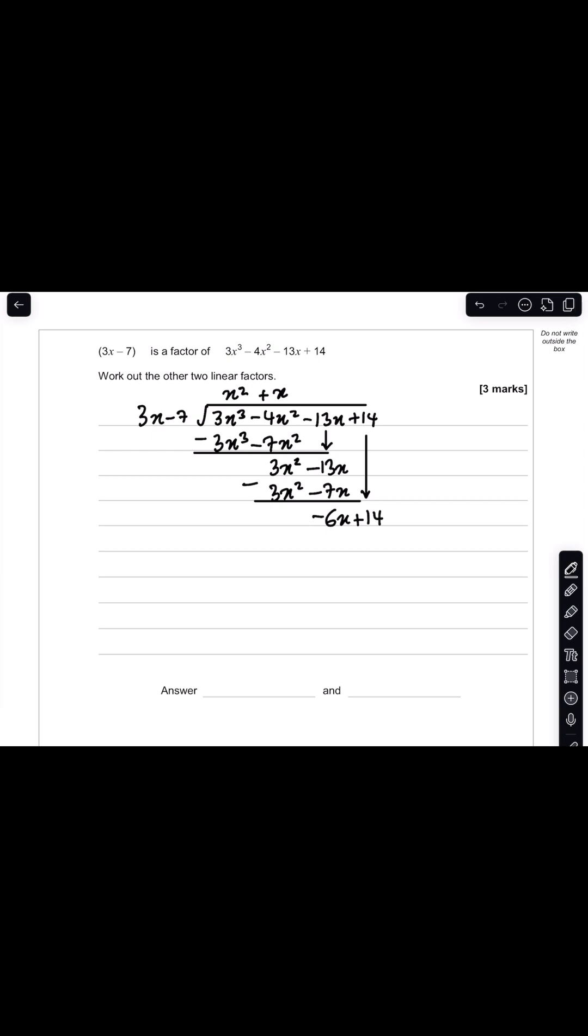And then I'll divide minus 6x by 3x which would give me minus 2. Minus 2 multiplied by 3x is minus 6x, and then minus 2 times minus 7 is positive 14. And so when we subtract these two linear expressions that gives us 0.